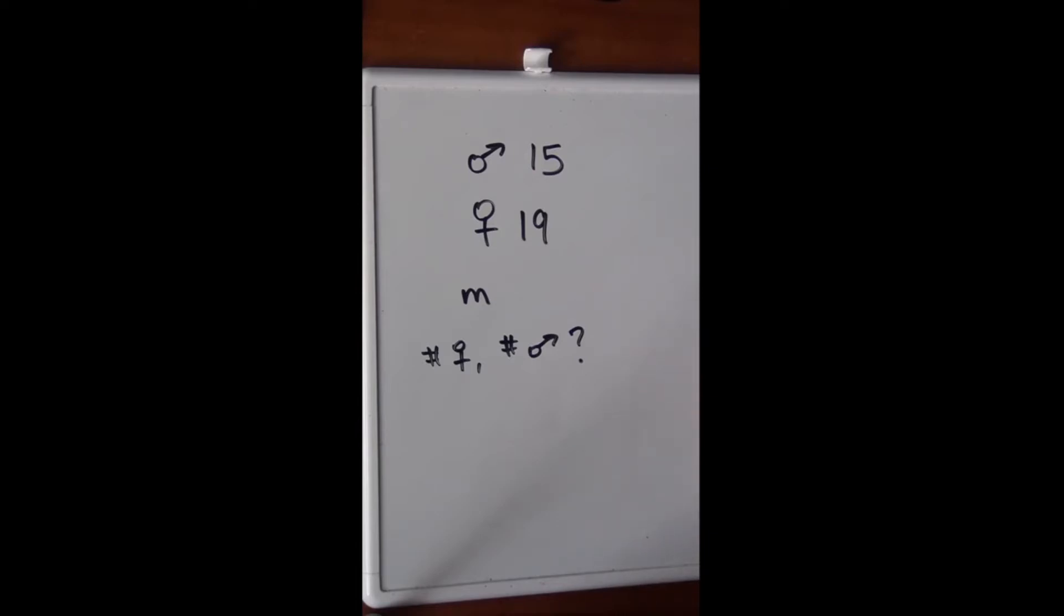So that only leaves us with choice D, which is the correct answer. And if you can think about it this way as well, the mean of the entire group of primates has to be between 15 and 19 because 19 is the upper cap because that's the mean of the females, whereas 15 is the lower cap, the mean of the males. So choice D here is the best answer.